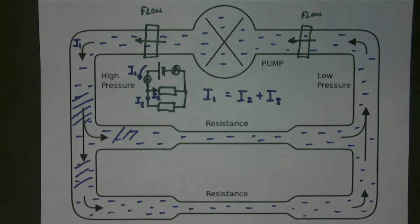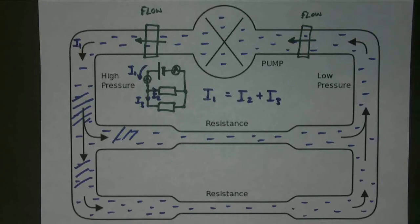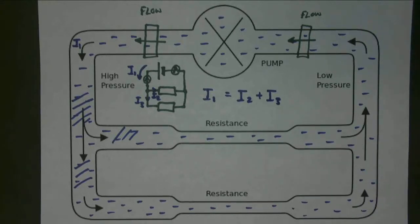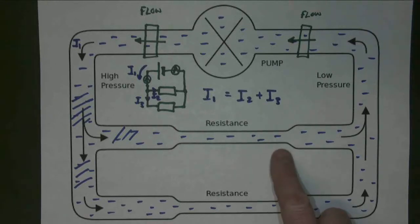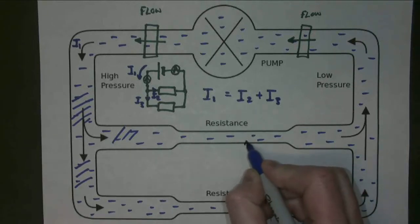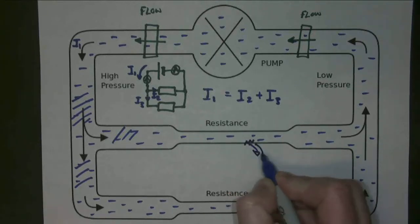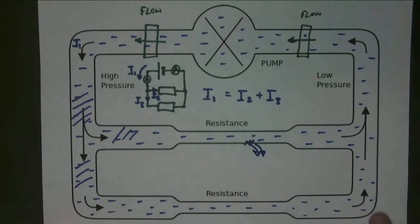Analogies are very good for some things. This analogy is very good for looking at how current flows in pipes — the pipes are analogous to wires. But analogies also sometimes fail, because if I were to break one of these pipes, then the water would all fall out. So if I had a crack, the water would flow out of the pipe. But that doesn't happen in an electrical circuit — when you break the wire, the electrons don't all fall out.